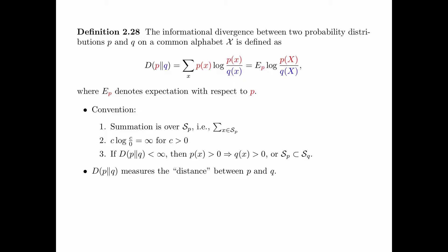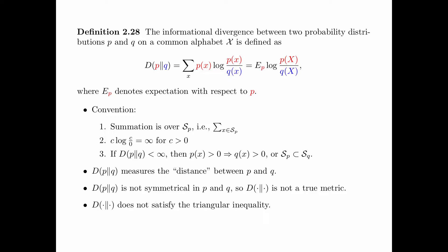The divergence D(p||q) measures the distance between p and q. Note that D(p||q) is not symmetrical in p and q, and so the divergence D is not a true metric. Also, the divergence D does not satisfy the triangle inequality.